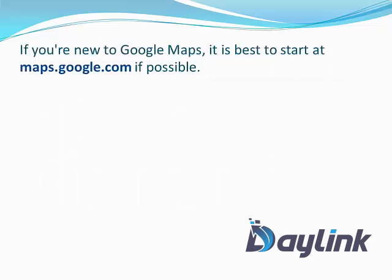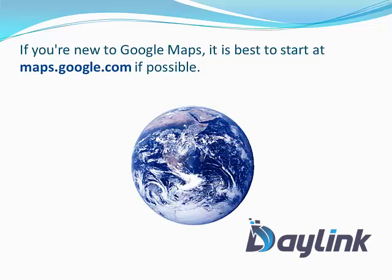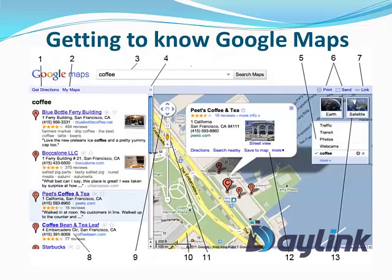If you are new to Google Maps, the best way to start is at maps.google.com if possible. So let's go ahead and check out maps.google.com. This is their website and this is how it looks. You'll be looking at several areas which are pointed and given numbers, and I'll cover each of them in this tutorial.